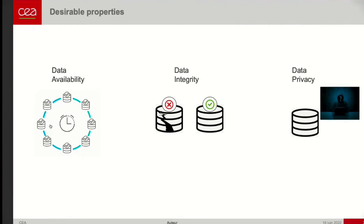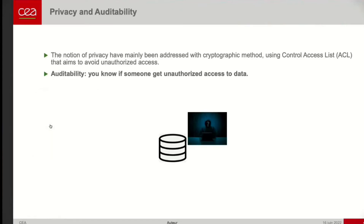When we talk about distributed storage, what we want is availability, integrity, and data privacy. We are focusing on the last one. Data privacy can typically be enforced with cryptographic methods and with access control lists, for instance. But what we are working on is: what if this does not work and someone can access our data?